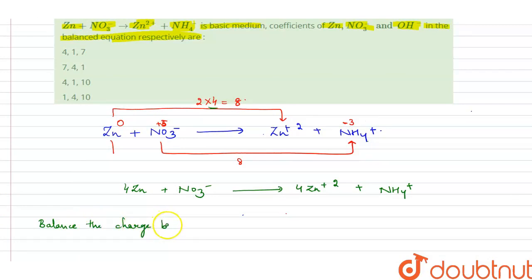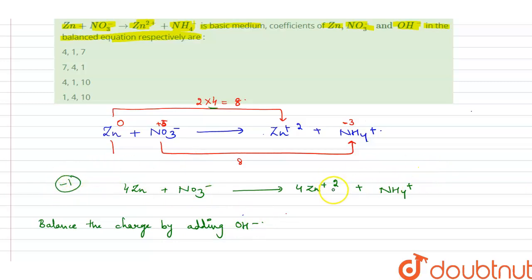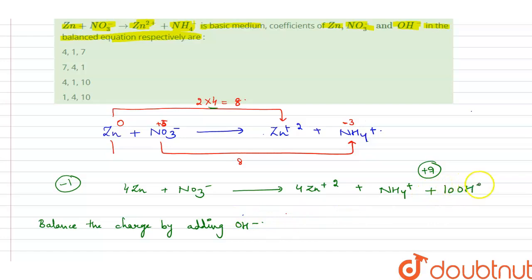We balance the charge by adding OH⁻. The total charge on the left is −1, and on the right it is +8 + 1 = +9. So we add 10 OH⁻ to the left side to make the charges equal: 4Zn + NO3⁻ + 10 OH⁻ → 4Zn²⁺ + NH4⁺.